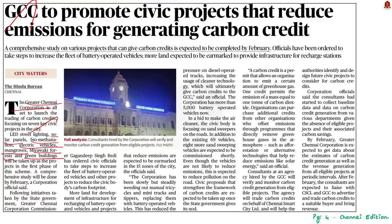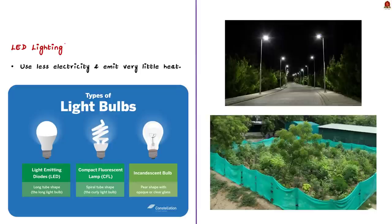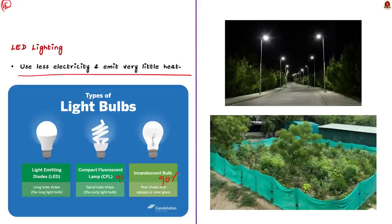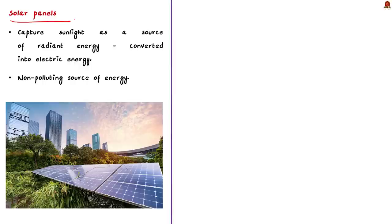The first project is LED street lighting. LEDs use less electricity and emit very little heat. In comparison, incandescent bulbs release 90% of their energy as heat and CFLs release about 80% as heat. Hence LEDs are a better option for street lighting. The second project is installation of solar panels, which capture sunlight as radiant energy and convert it into electric energy. Solar energy is non-polluting and can earn carbon credits for the organization.